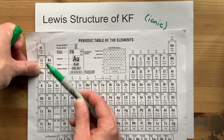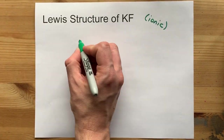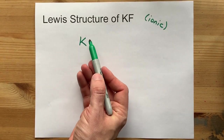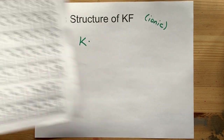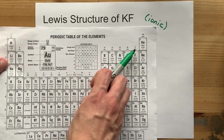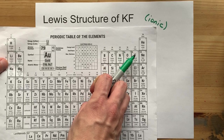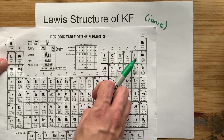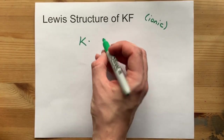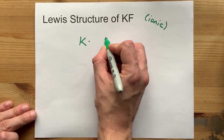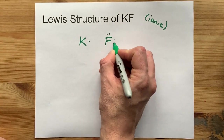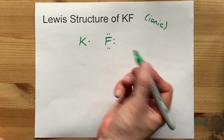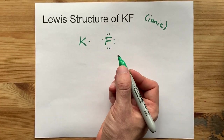Potassium is in group 1, and so has 1 valence electron. Fluorine in group 17 brings 7 valence electrons. All of these halogens bring 7 valence electrons — the way I remember that is that all of the group 17 atoms bring 7.